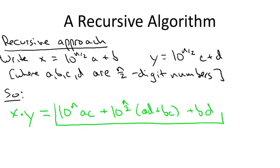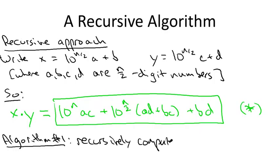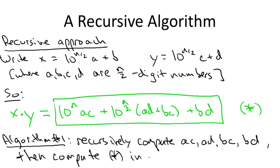Let's put a box around this expression and call it star. We began with the sort of obvious recursive algorithm where we just evaluate the expression star in the straightforward way. That is, star contains four products involving n over two-digit numbers: AC, AD, BC, and BD. So we make four recursive calls to compute them, and then we complete the evaluation in the natural way. Namely, we append zeros as necessary and add up these three terms to get the final result.